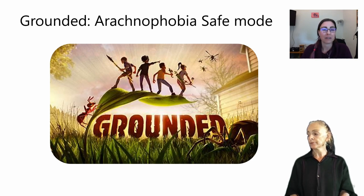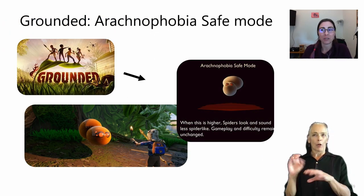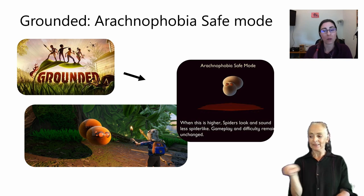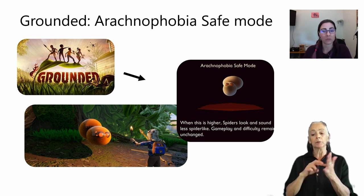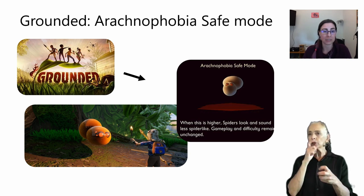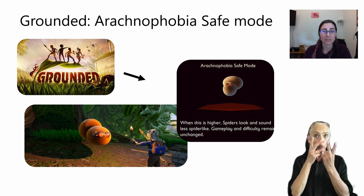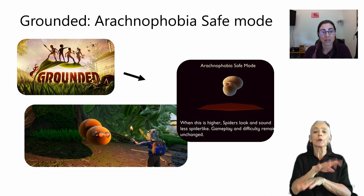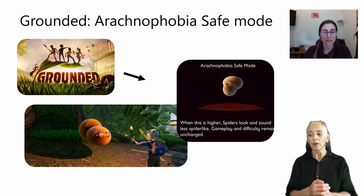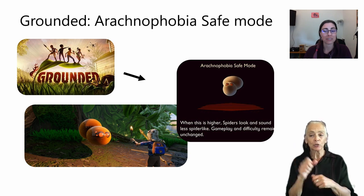The first example is Grounded. The Obsidian team worked with research to develop something called Arachnophobia Safe Mode. There's a slider scale in the game's options menu that allows players to change the look and sounds of spiders. The gameplay and difficulty remain unchanged regardless of slider position. Options include removing spider visuals altogether, reducing legs to four rather than eight, removing all spider legs, removing the spider mesh to simple shapes, and changing spider materials to simple colors with shiny textures. The number of eyes, legs, fur, and even the sounds can be adjusted.